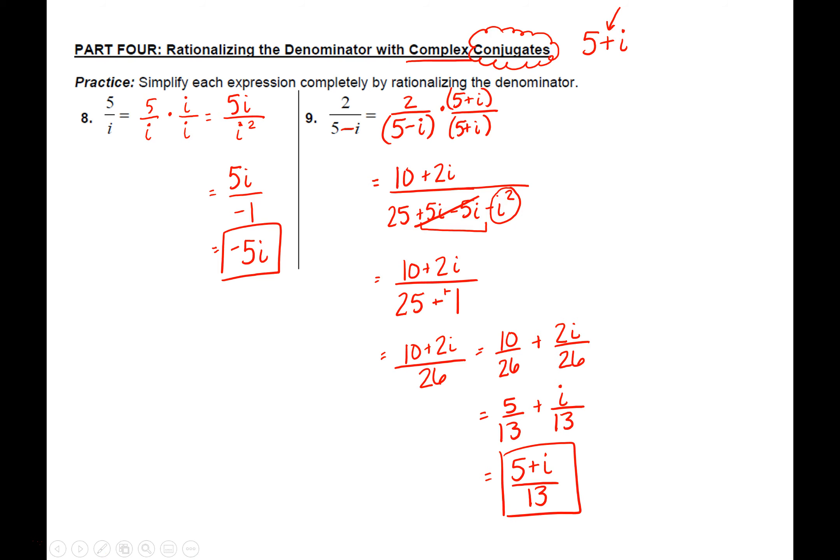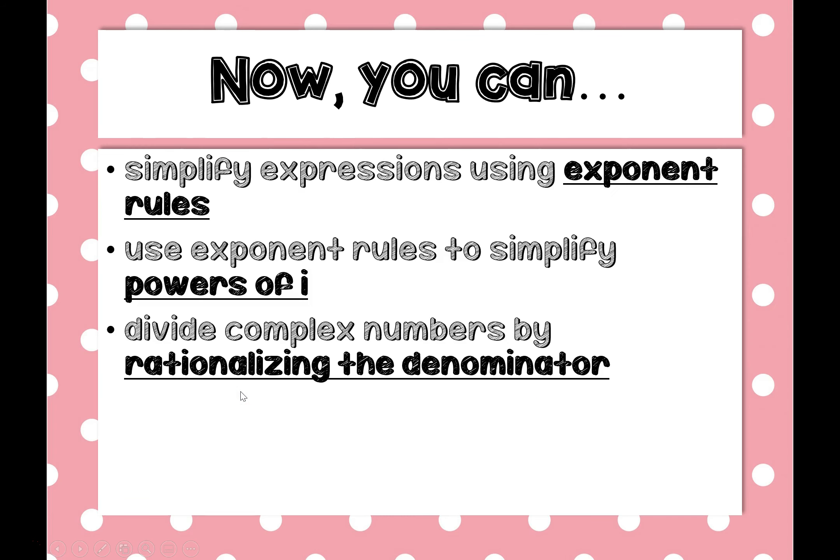So I know that's a lot of things today. Hopefully the first part was just a review of algebra 1 — simplifying expressions using exponent rules. The new parts should have been simplifying powers of i using those exponent rules, and dividing complex numbers by rationalizing the denominator to get i out of the denominator. Go ahead and try the 'now you try' problems and then check in class.